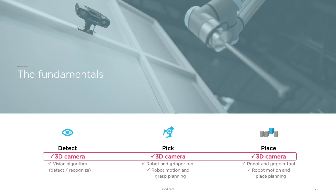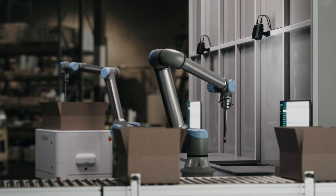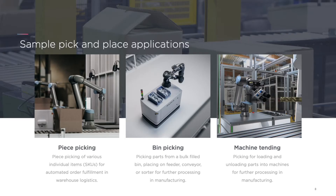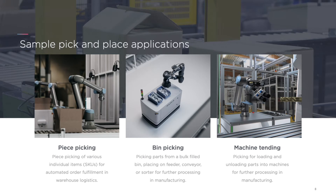Let's look at some sample pick-and-place applications. First, piece picking — in a warehouse logistics setting, a robot picks various individual SKUs for automated order fulfillment. In the manufacturing environment, we have bin picking, where a bin is randomly filled with objects and the robot picks each individual one, placing them on feeders, conveyors, or sorters.